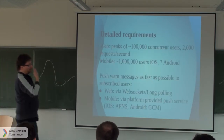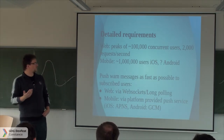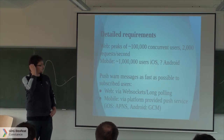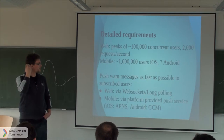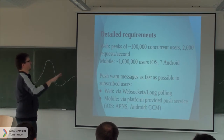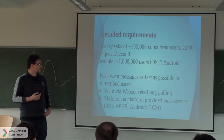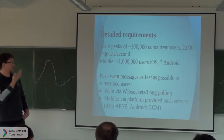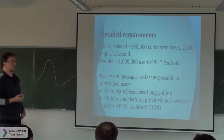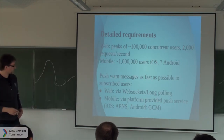What figures are we talking about — the detailed requirements? For the web, we usually have peaks of around 100,000 concurrent users serving the site, which results in something like 2,000 requests per second. For mobile users, we have around 1 million users for iOS, and I haven't really looked into the Android part yet so much.